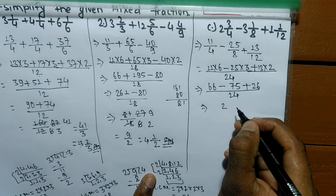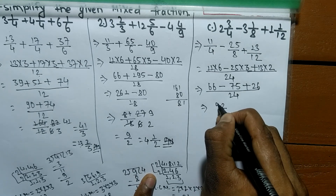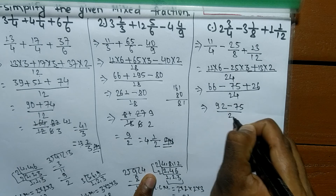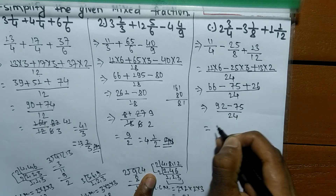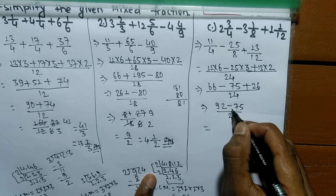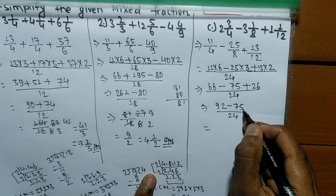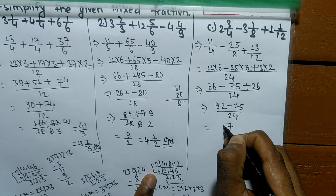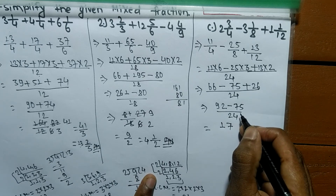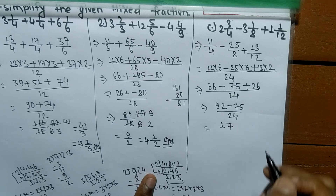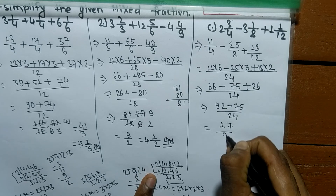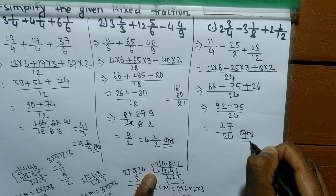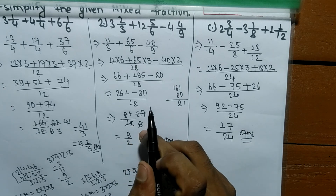So 66 plus 26: 6 plus 6 means 12, carry 1; 6 plus 2 means 8, plus 1 means 9. So 66 plus 26 means 92, minus 75 by 24. So 92 minus 75 means 17 by 24, which is our answer.